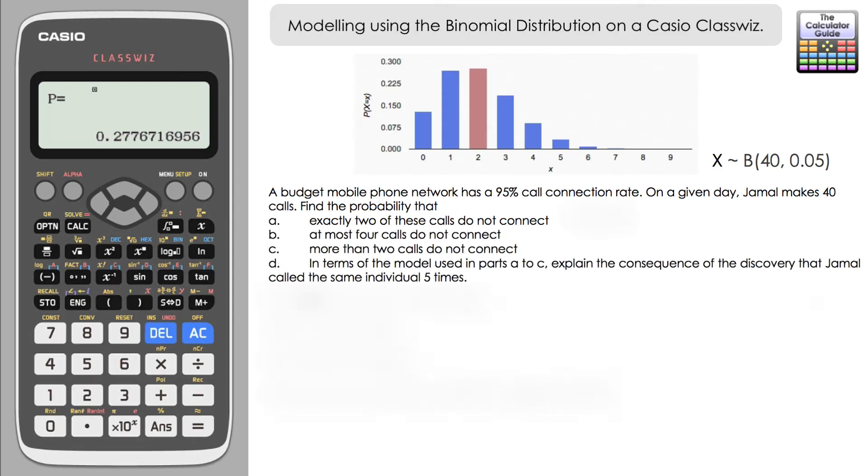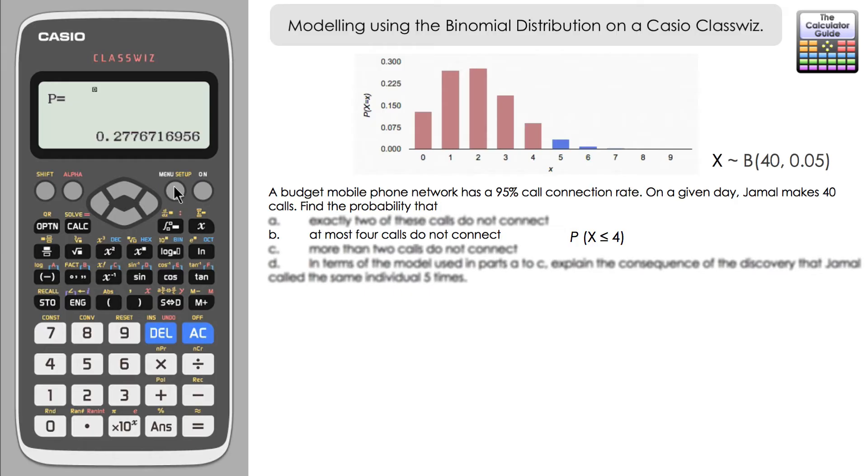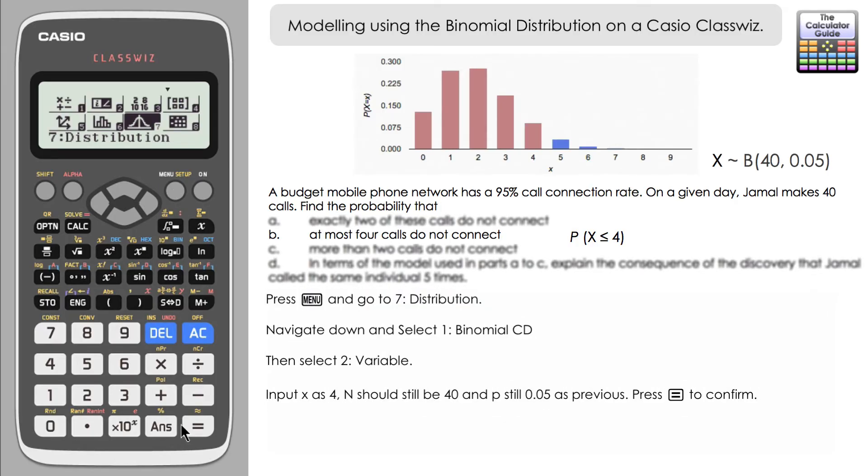So let's have a look at part b. So part b will find the probability that at most four calls do not connect. So we've got at most. So we could model this as the probability that x is less than or equal to four, we are going to need the binomial cumulative distribution for this. So we just need to come back into menu distribution mode. And then we want to navigate down we want binomial CD binomial cumulative distribution.